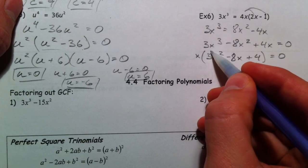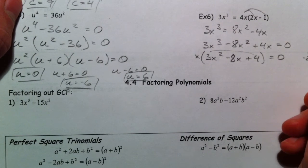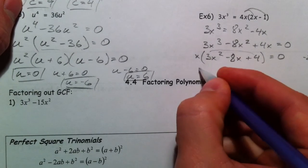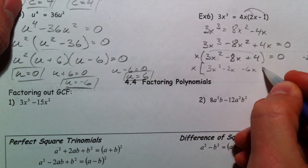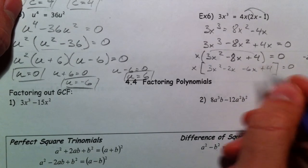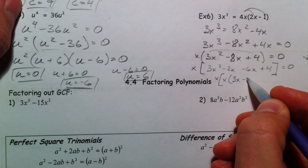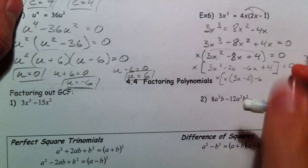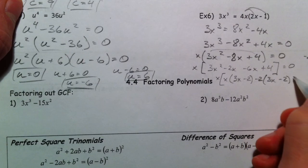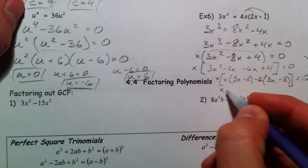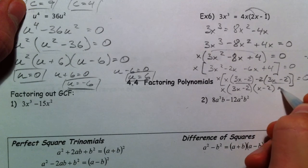And we can do our AC method. 3 times 4 is 12. What multiplies to 12 and adds to negative 8? So, negative 2 and negative 6. You get 3 and 4, but that only gets 7. So, the x is out front. 3x squared minus 2x minus 6x plus 4. Pull out an x. 3x minus 2 is left. Pull out a negative 2. A negative 2 and a positive 3x. x minus 2 is left. So, then x times this common 3x minus 2. And x minus 2 equals 0 is left.